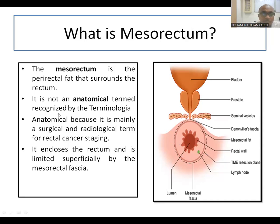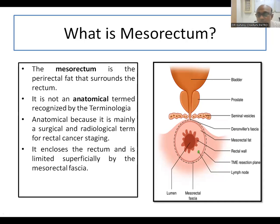The mesorectum is an anatomical term recognized in anatomical terminology, but it is mainly a surgical and radiological term used for rectal cancer staging. It encloses the rectum and is limited laterally by the mesorectal fascia.